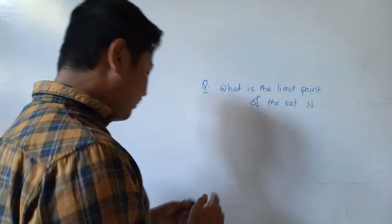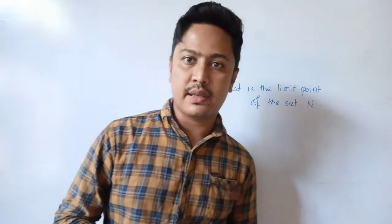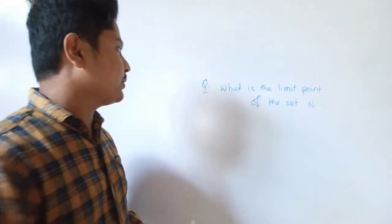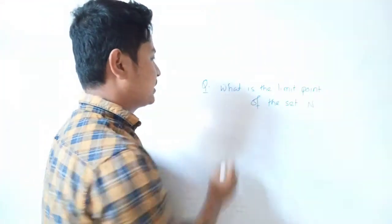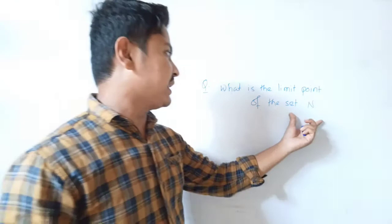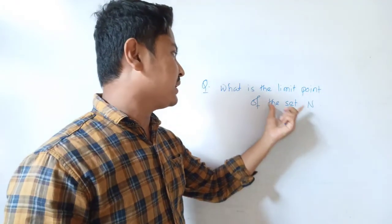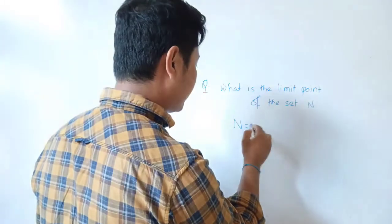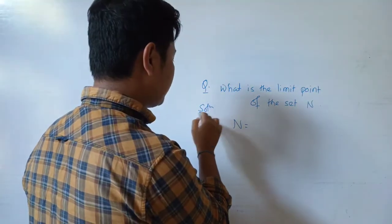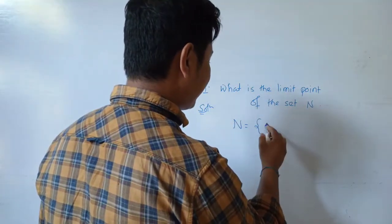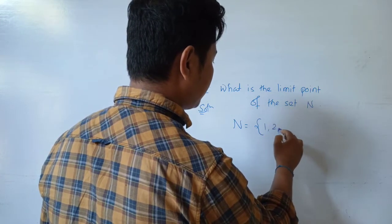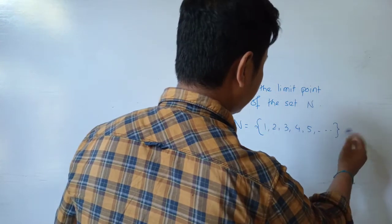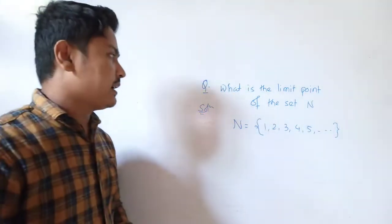We have already studied about the concept of limit point of a set. In this video we are going to find the limit point of certain sets. The set of natural numbers contains elements like one, two, three, four, five, and so on.